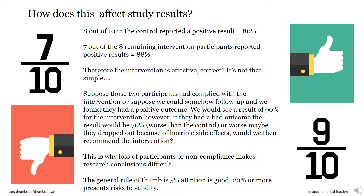Say we were able to capture the data of the 10 people in the intervention group, and we still found only 7 reported a positive outcome. This would give us a result of 70%, which is worse than the control group. Possibly the two people who dropped out had such horrible side effects that researchers may deem these side effects so severe that they do not outweigh the positive outcomes. Or maybe the two missing participants had positive outcomes, making the result 9 out of 10, or 90%, which is still better than the control group. This is why loss of participants makes it so hard for researchers to report their findings accurately.